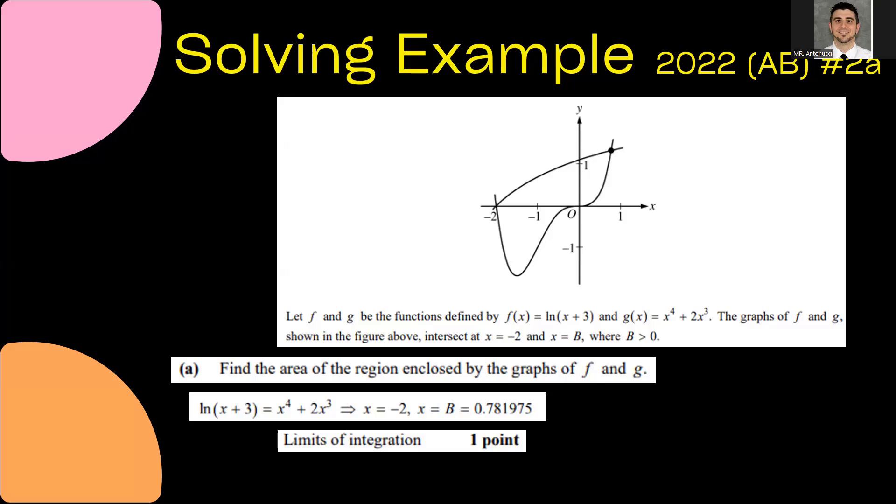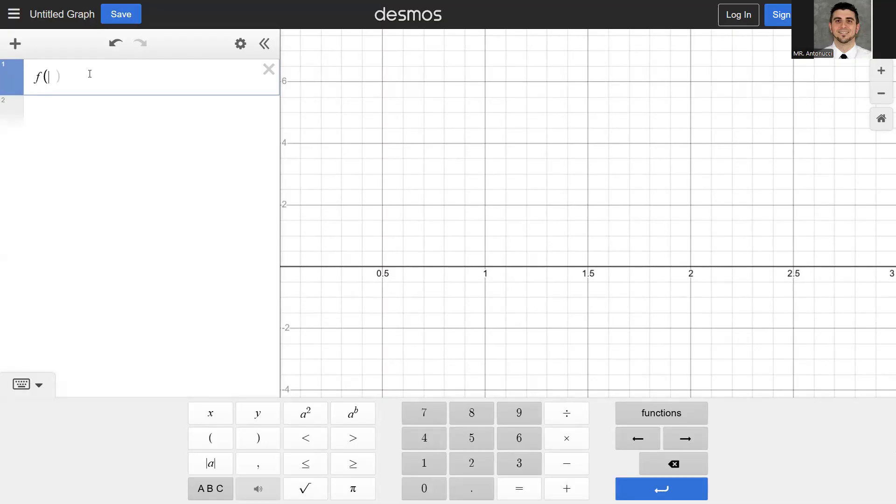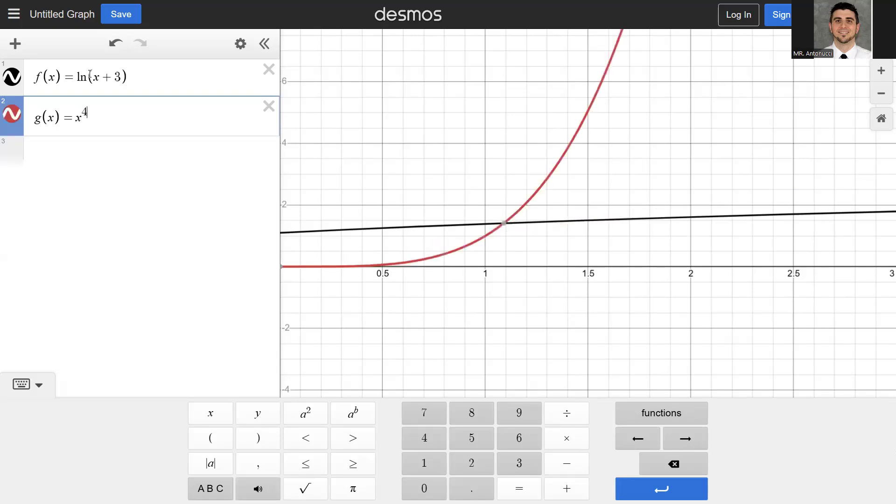So this one comes from the 2022 AB exam question number 2A. You have a region here and you need to find the area of the region enclosed by the graphs. Well, in order to do that, we need to find where the two intersection points are on the graph. So we can use Desmos to do that. So the two functions were f(x) = ln(x + 3) and then g(x) = x⁴ + 2x³.